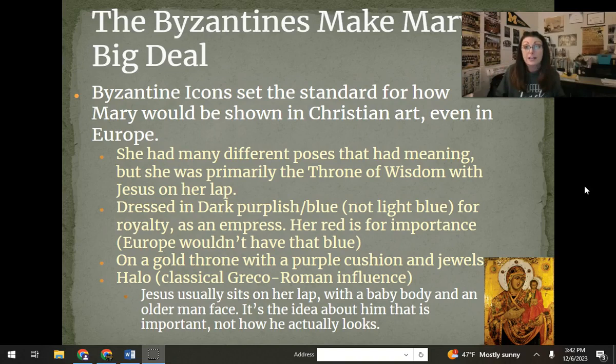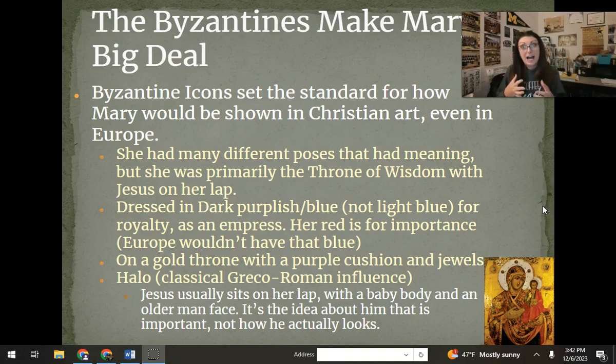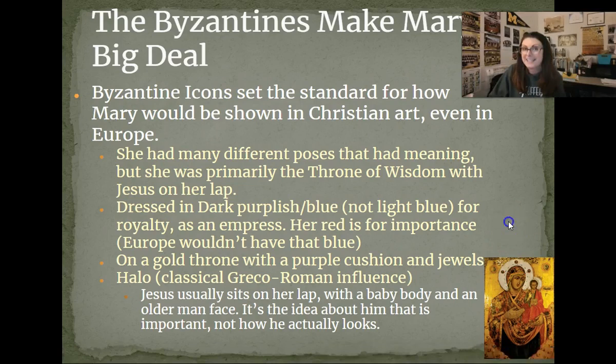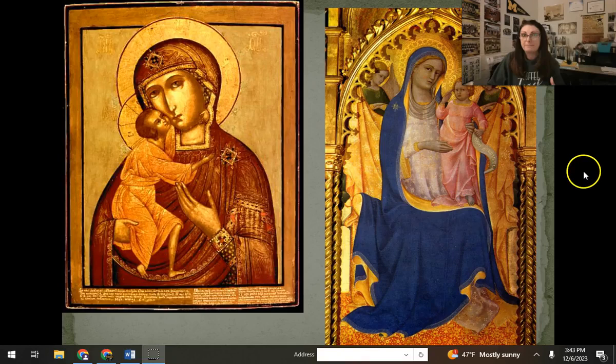She's also shown usually on a golden throne, sitting on a purple cushion for royalty, with jewels all over her. She would usually have a halo — something from classical Greece and Rome, since they used halos for the sun god and such, and Christian figures adopted that. Typically, Jesus is sitting on her lap with a baby's body and an old man's face, because he's wise — he's Jesus — and they don't really care how naturalistic it looks; it's more important about the idea. Case in point: Mary always looks tired, like the baby kept her up all night, and Jesus looks like an old man with a baby's body.